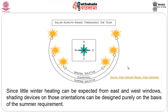Looking at the solar azimuth range throughout the year — winter solstice, equinoxes, and summer solstice — since little winter heating can be expected from east and west windows, shading devices on those orientations should be designed purely on the basis of summer requirements, as east and west is the primary summer movement of the sun. For north and south, we need to focus on winter months.